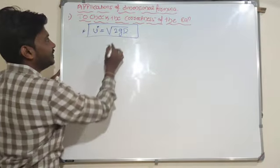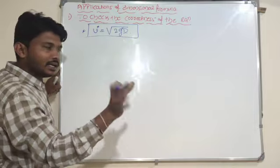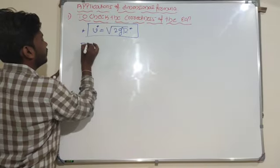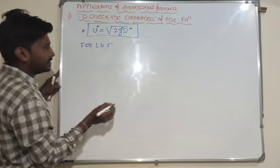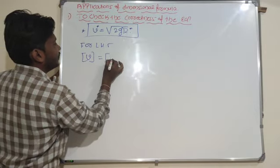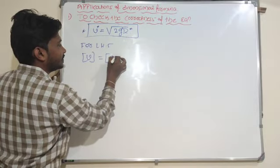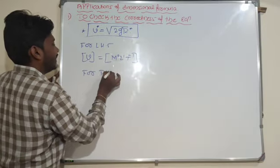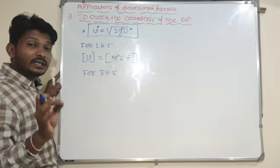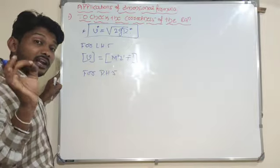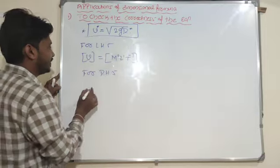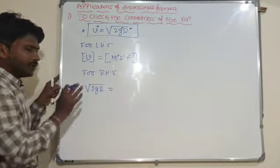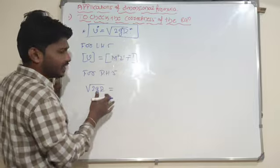For LHS, velocity: no mass term, M0 L1 T to the power of minus 1. For RHS, dimensional formula is not applicable for numbers, so we take square root of G into R. Acceleration due to gravity carries the same dimensional formula as acceleration: L1 T to the power of minus 2, whole to the power of 1 by 2.